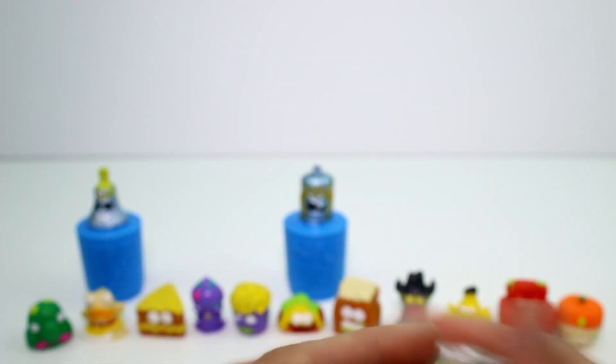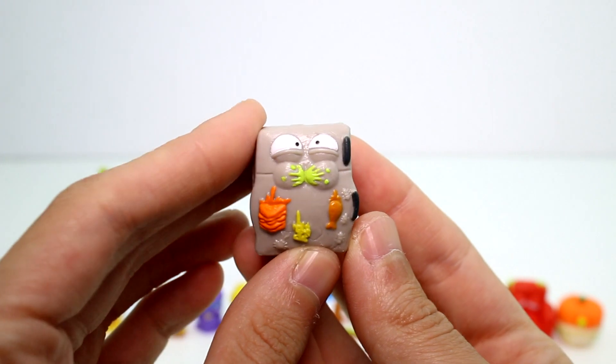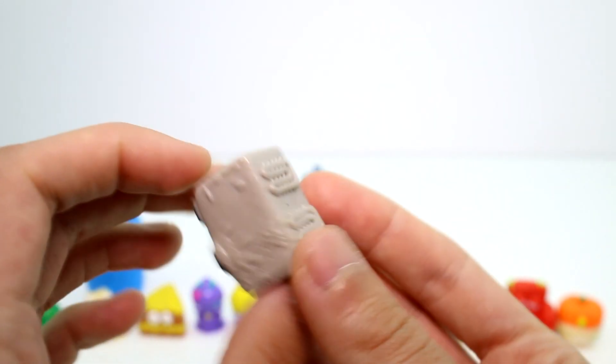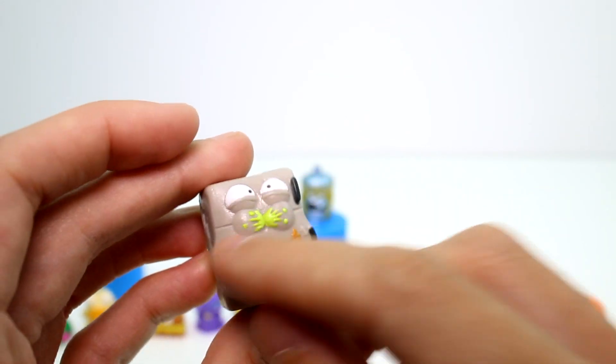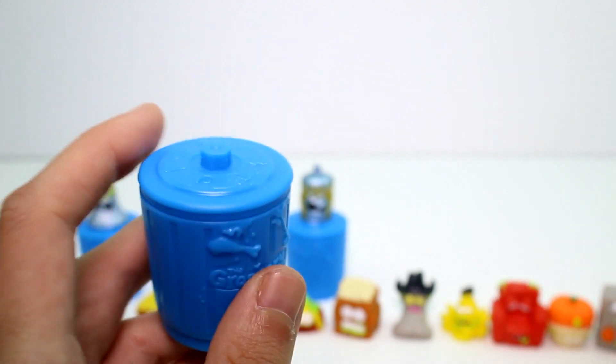And then we have the Pukey Pumpkin Pie. And then the last visible one we have is Fungus Fridge. And he's definitely so cool. I love him. Like how he has his puffed up cheeks like he's ready to barf.